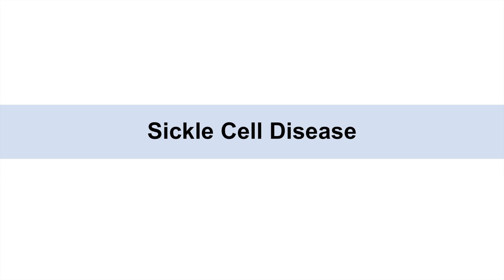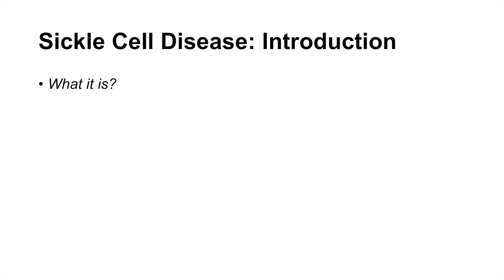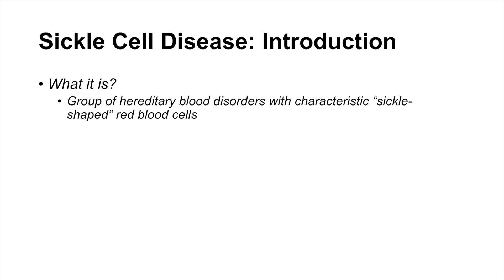Hey everyone, and this is where we're talking about sickle cell disease. So what is sickle cell disease? It is a group of hereditary blood disorders with characteristic sickle-shaped red blood cells. You can see here the cell on the right is a sickle-shaped red blood cell and the one on the left is a normal red blood cell.